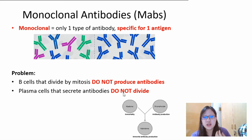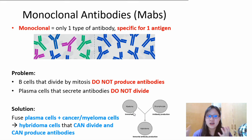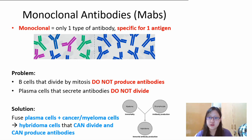Here's an interesting solution. Take plasma cells, which secrete antibodies, and take myeloma cells — or cancer cells — which can replicate limitlessly, and fuse them together. When you fuse them, you get something called hybridoma cells. The hybridoma cells will be able to do two things: divide and produce antibodies. That is a combination we cannot naturally find, but we can create synthetically in the lab.